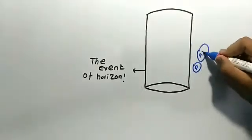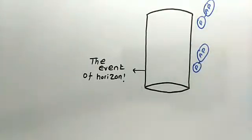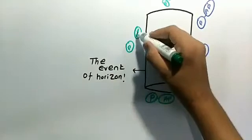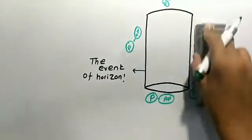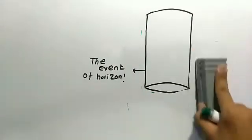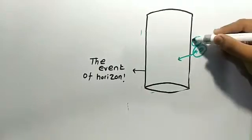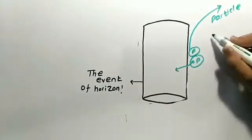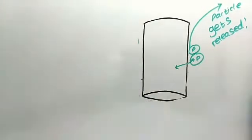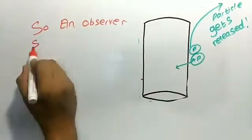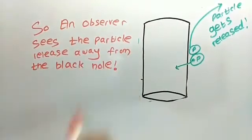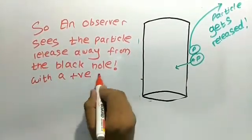So now there are anti-particles and particle pairs formed near the event horizon of the black hole coming from the vacuum. What Mr. Stephen Hawking said is that particles and anti-particles get accumulated near the event horizon, and the particle gets released, ejected away from the black hole, and the anti-particle, both are hypothetical by the way, gets absorbed by the black hole. An observer sees the particle released away from the black hole with a positive energy.